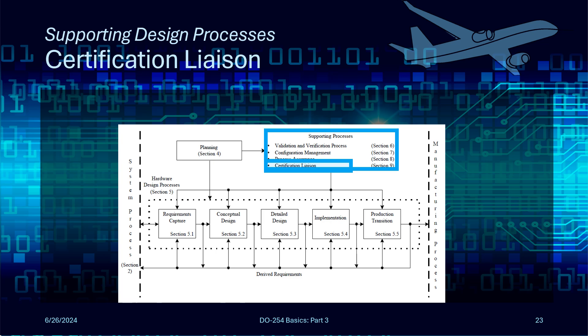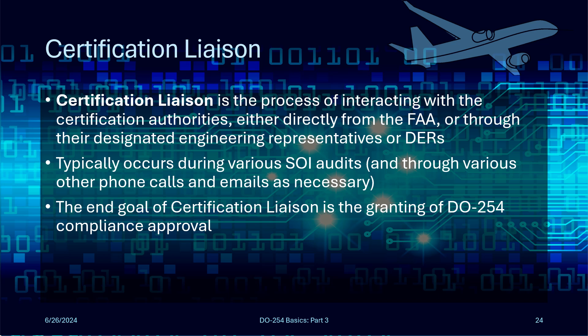The final supporting process is certification liaison. Certification liaison is the process of the team interacting with the certification authorities — the FAA or, more likely, their designated engineering representatives, or DERs. The FAA has very little staff, so it's usually through their designees, with FAA oversight, that this occurs. This includes formal SOI audits, sending data for review, answering questions, reviewing post-audit reports — any interaction with the certification authorities or their designees. These authorities are the ones who will ultimately grant you DO254 compliance approval.